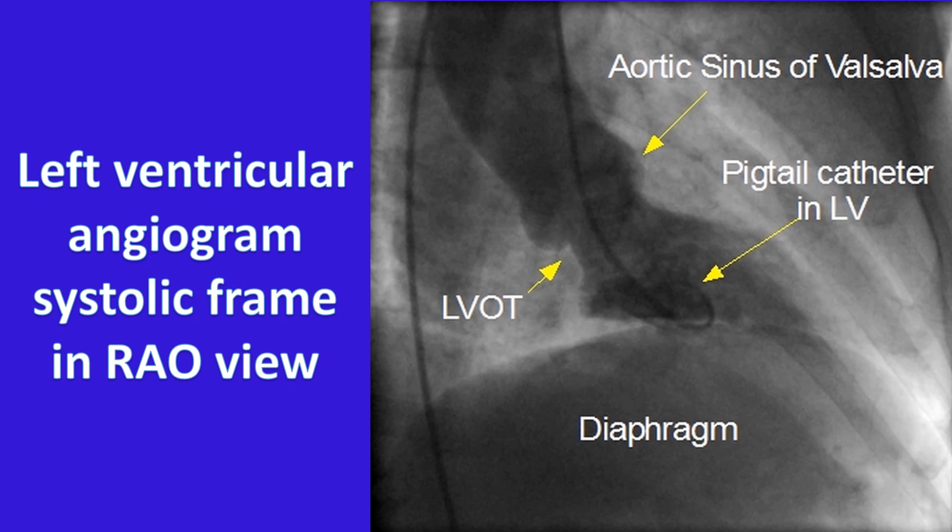As there are multiple holes in different directions, the recoil force on the pigtail catheter is cancelled out, and the chance of a single jet producing myocardial staining is reduced.